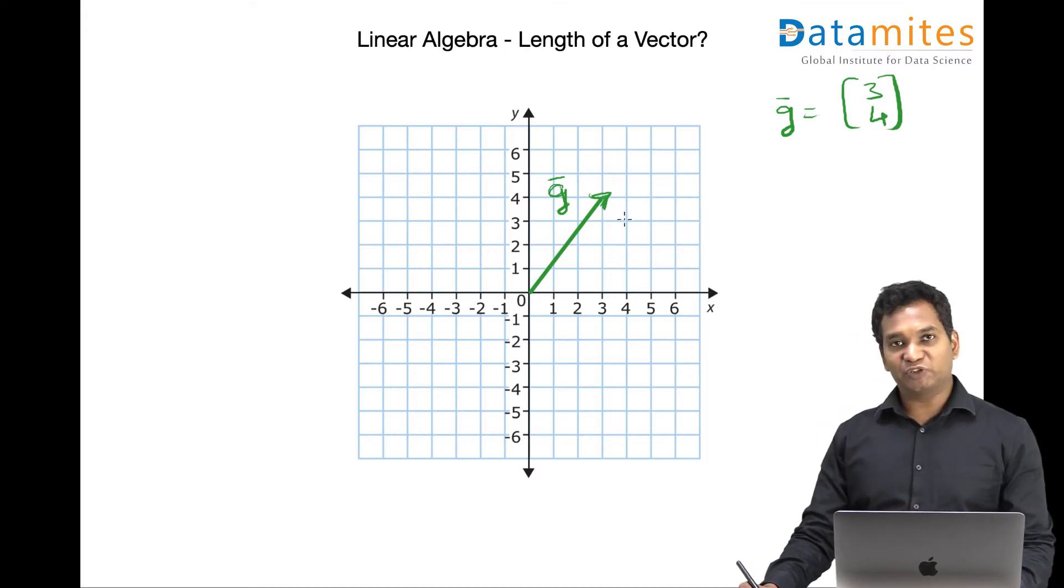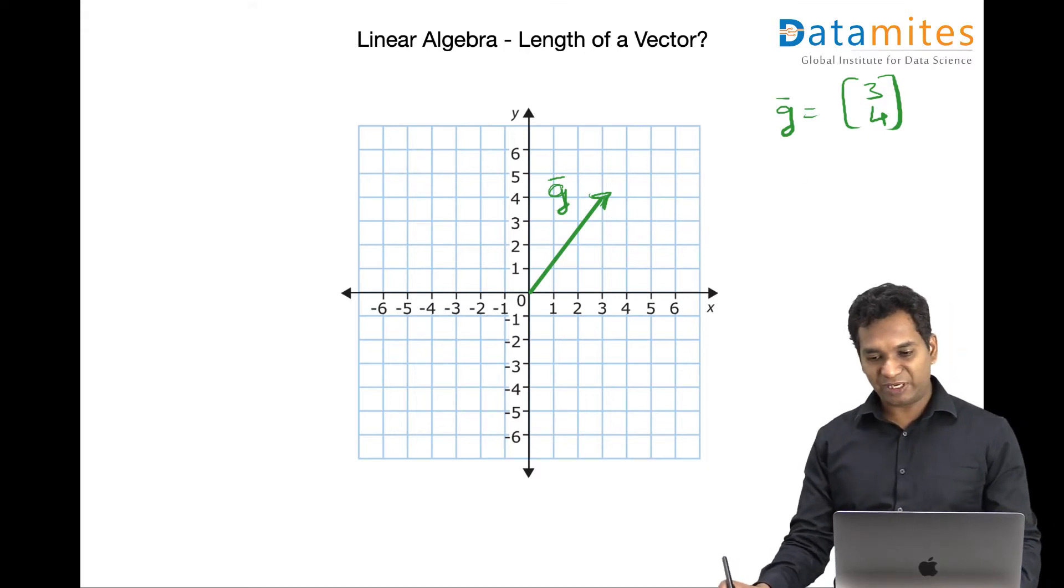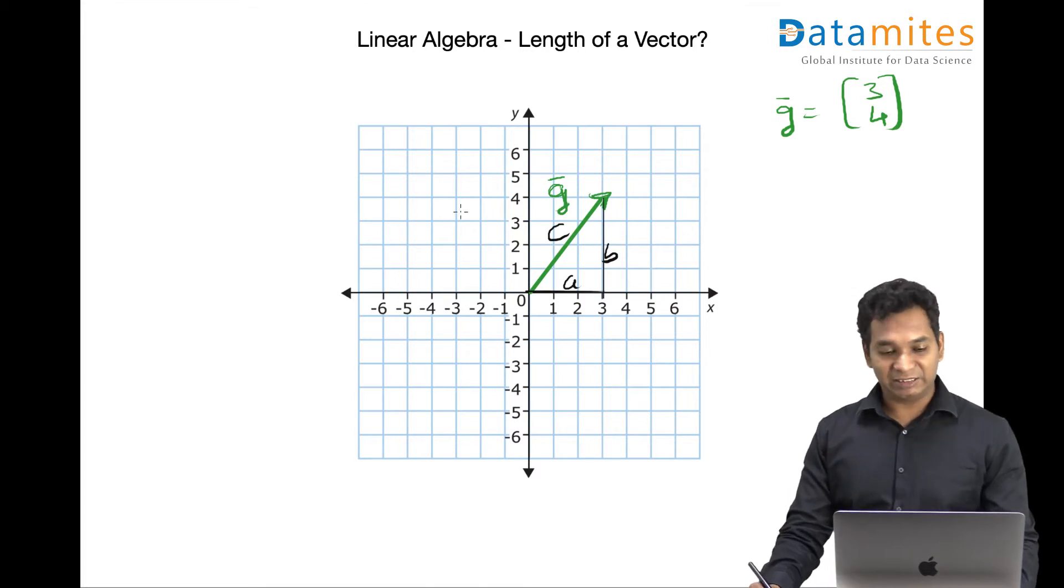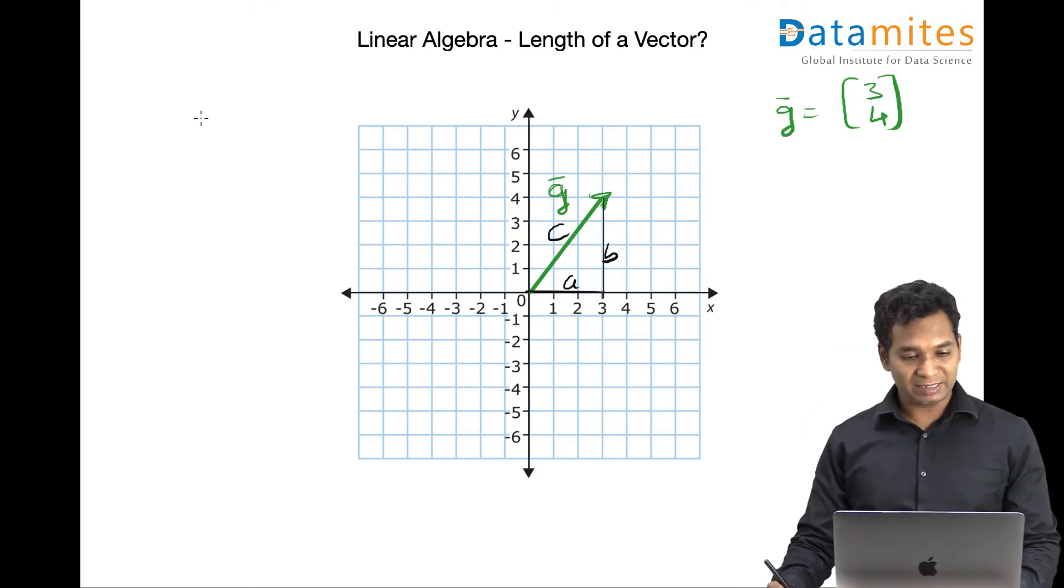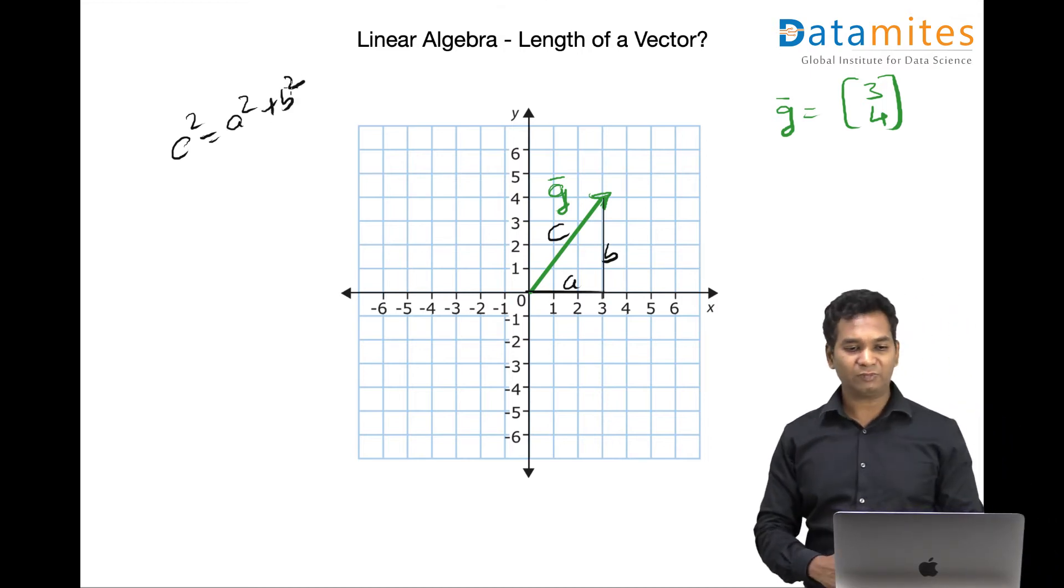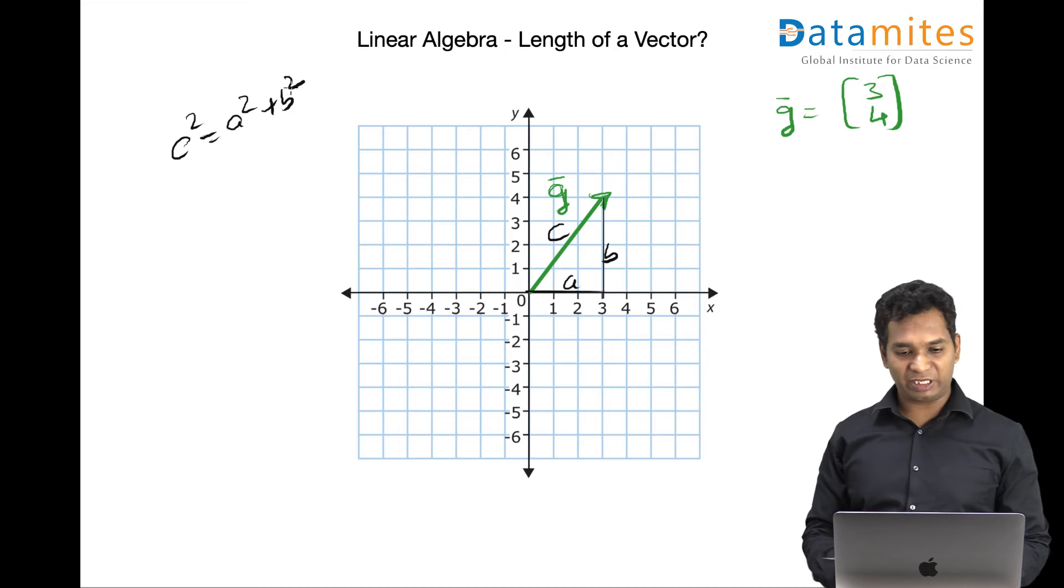To find the length of this vector, as you can see, it's pretty straightforward because it's a right-angled triangle. And if I take this as a and this as b and this as c, from the Pythagorean theorem, you know that c square is equal to a square plus b square.